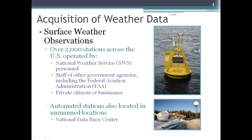So how do we acquire the weather data? We have a network of stations across the U.S. that are operated by the National Weather Service, and also from other governmental agencies like the FAA, the Federal Aviation Administration, as well as private citizens and businesses. We also have automated stations located in unmanned locations, like the National Data Buoy Center. You can see the picture here showing an ocean buoy outfitted with sensors for monitoring weather conditions — there's no person out there overseeing it, it's just automated and the data are sent back to the National Weather Service.